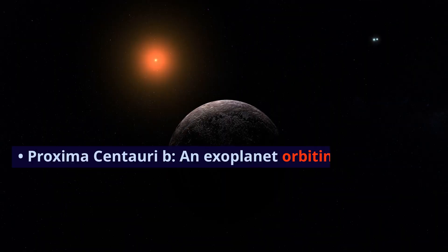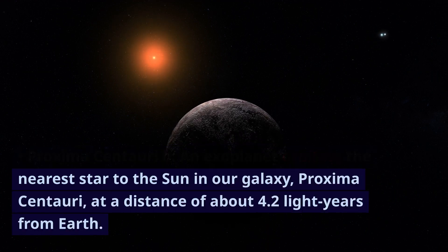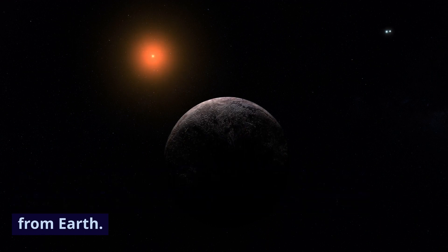Proxima Centauri b: an exoplanet orbiting the nearest star to the Sun in our galaxy, Proxima Centauri, at a distance of about 4.2 light-years from Earth.